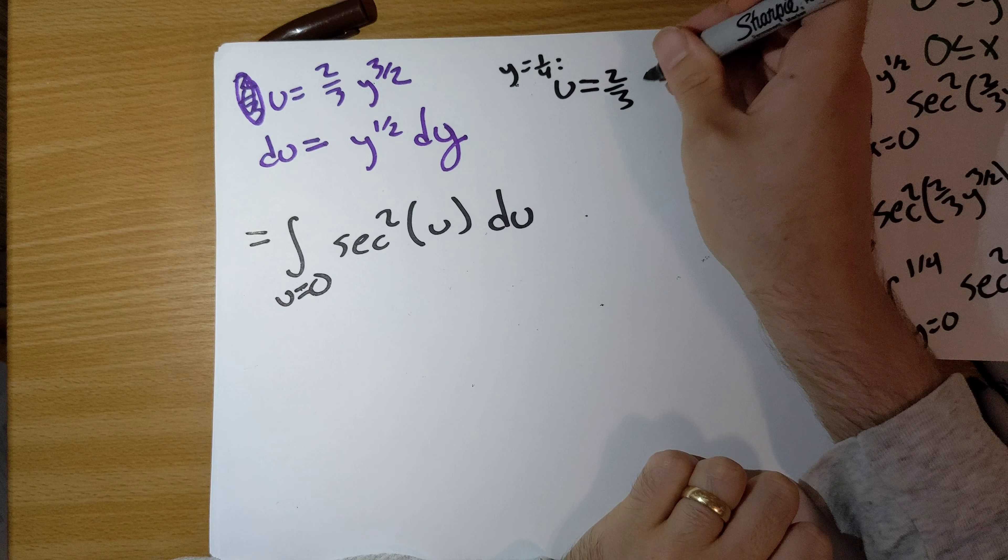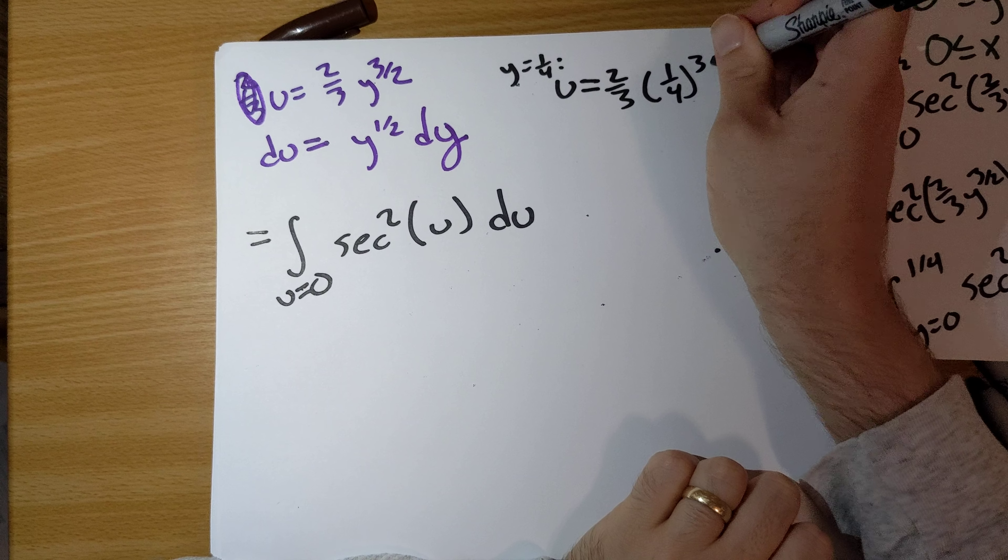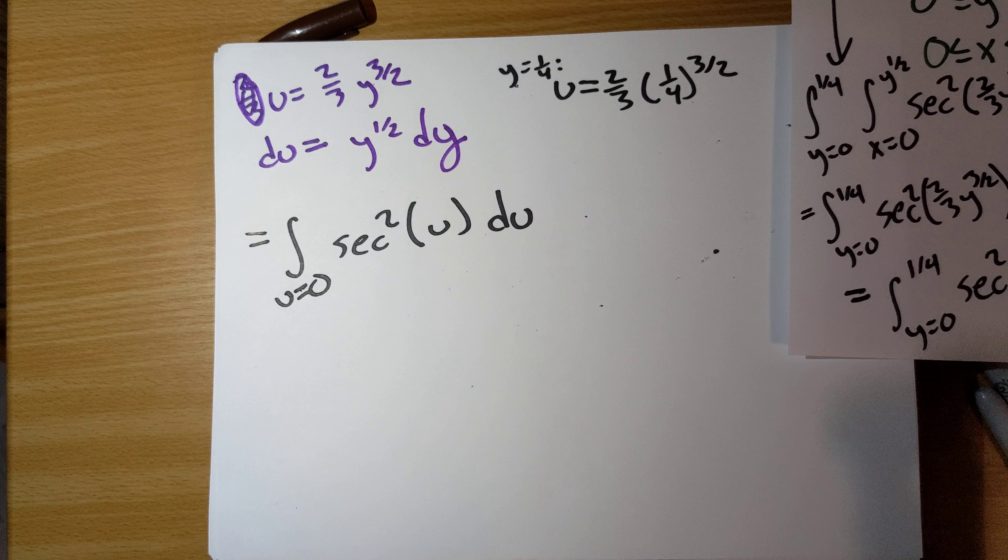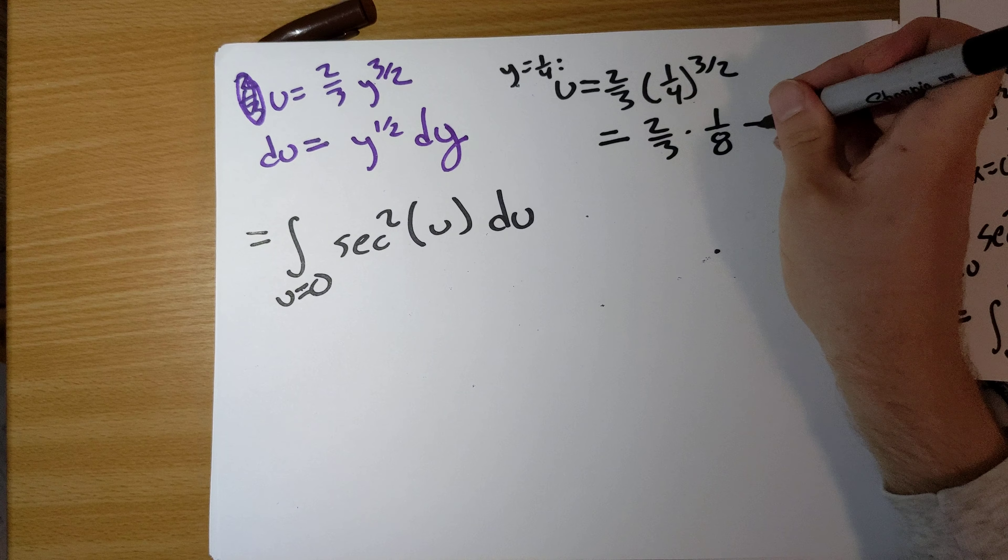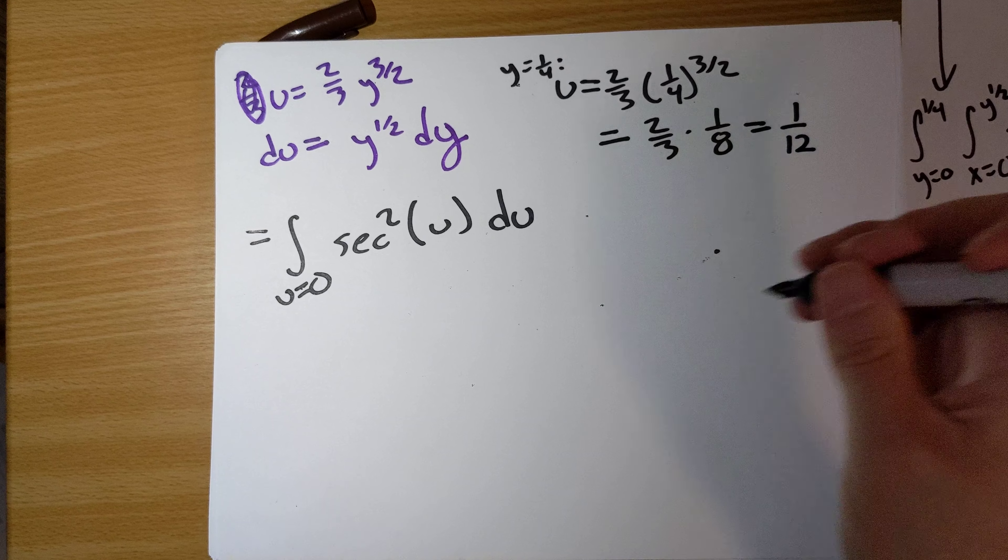u equals 2/3 times a quarter to the 3/2 power. And so this should equal 2/3 times 1/8, which is 1/12.